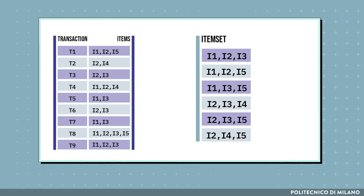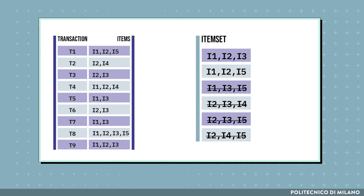These new candidate sets are frequent only if all the subsets of them are frequent. So, for instance, the item set {i1, i2, i3} may be frequent as the item sets {i1, i2}, {i1, i3}, and {i2, i3} are frequent. On the other hand, the item set {i2, i3, i4} is not frequent as {i3, i4} is not frequent.